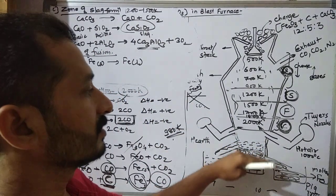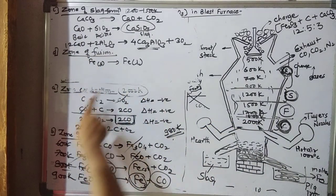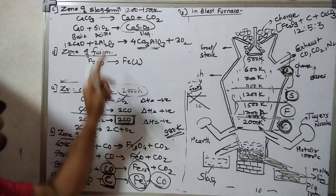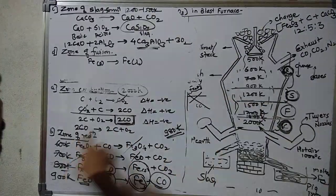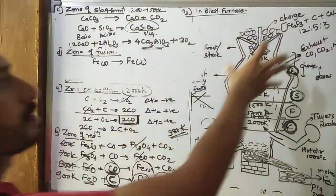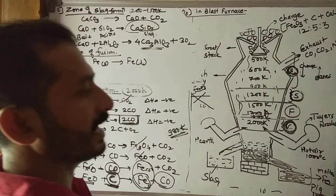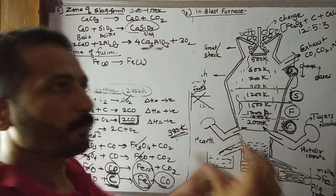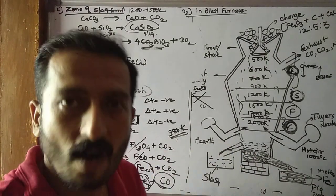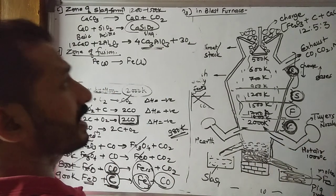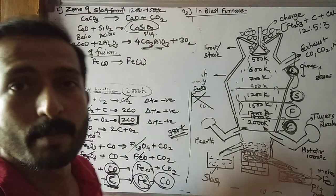So all these are the different mechanisms, different zones. There are four regions: zone of combustion, then zone of reduction, then zone of slag formation, and then zone of fusion. We have learned about the blast furnace and these four regions. And this iron obtained, the pig iron, is then purified. That pig iron is converted into cast iron, cast iron is converted into wrought iron, and then wrought iron is converted into steel through different processes.